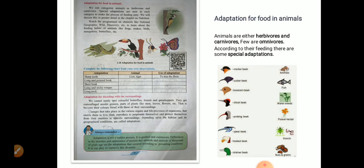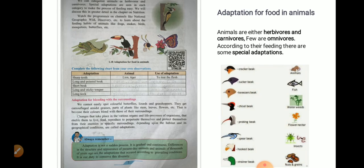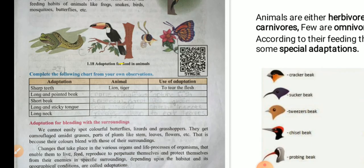In case of a woodpecker, it is very hard and long because it has to peck the wood. Similarly, if you see the sparrow or the crow, since they pick up the grain, see how the beak is shaped.